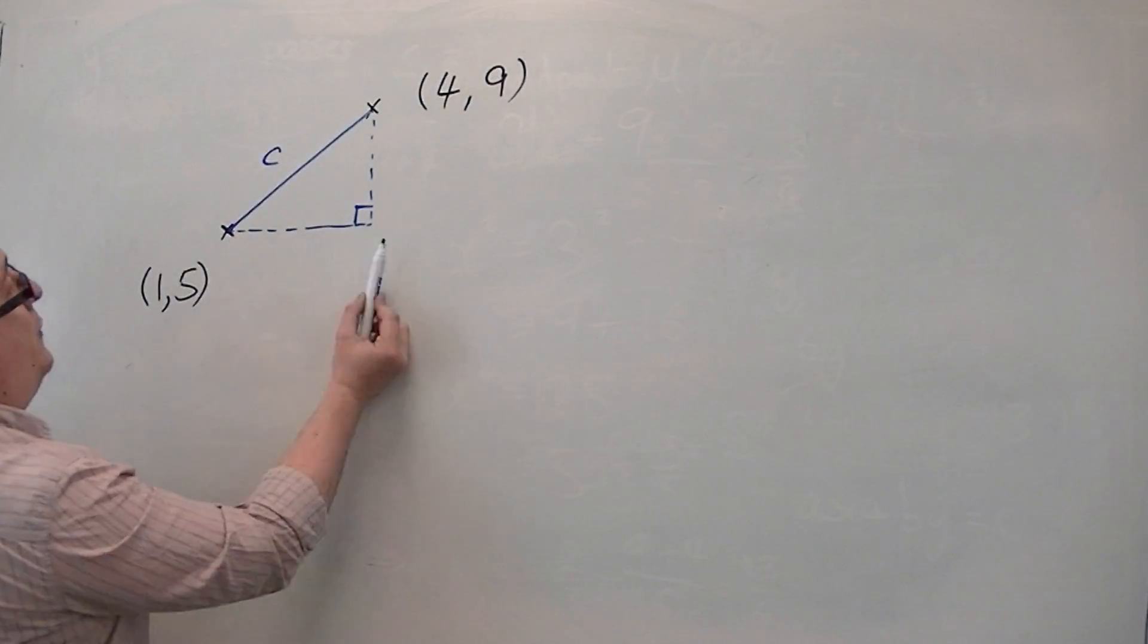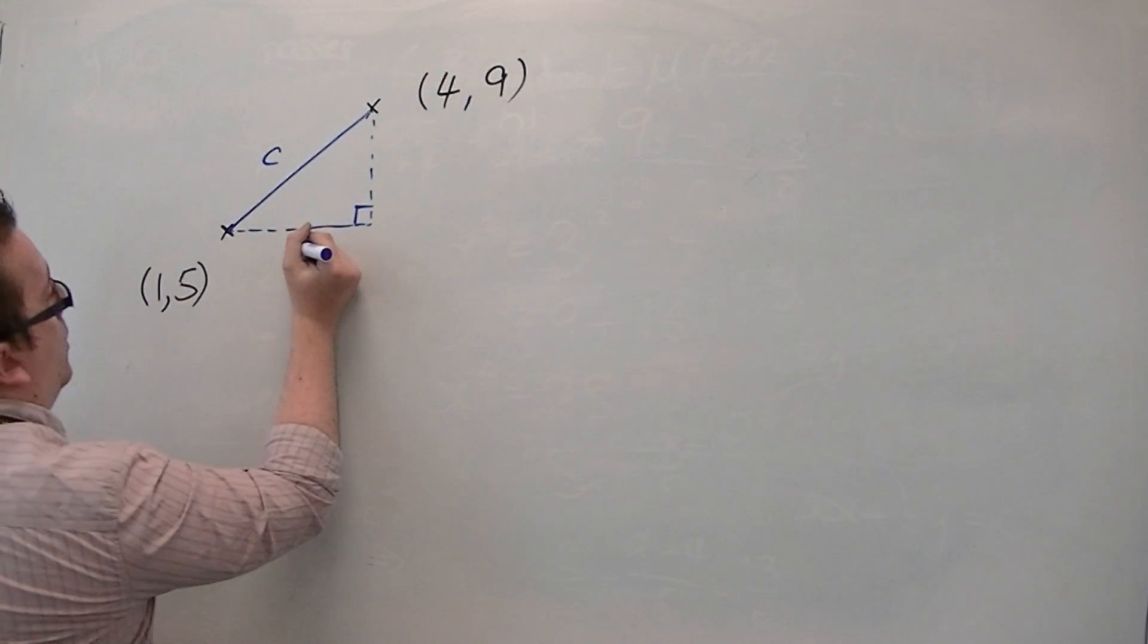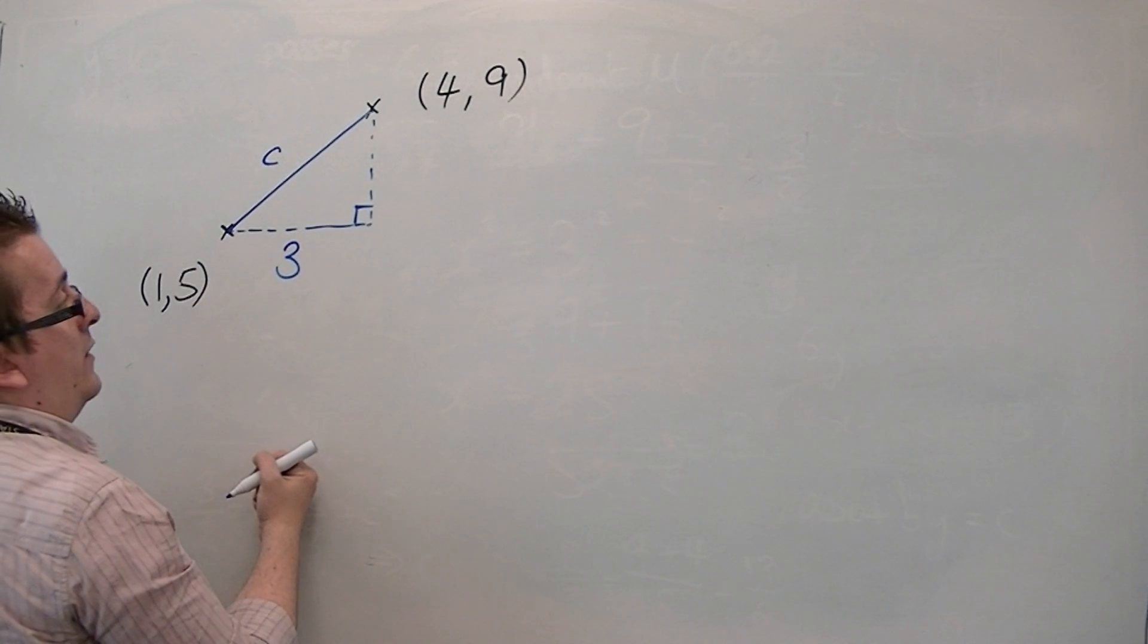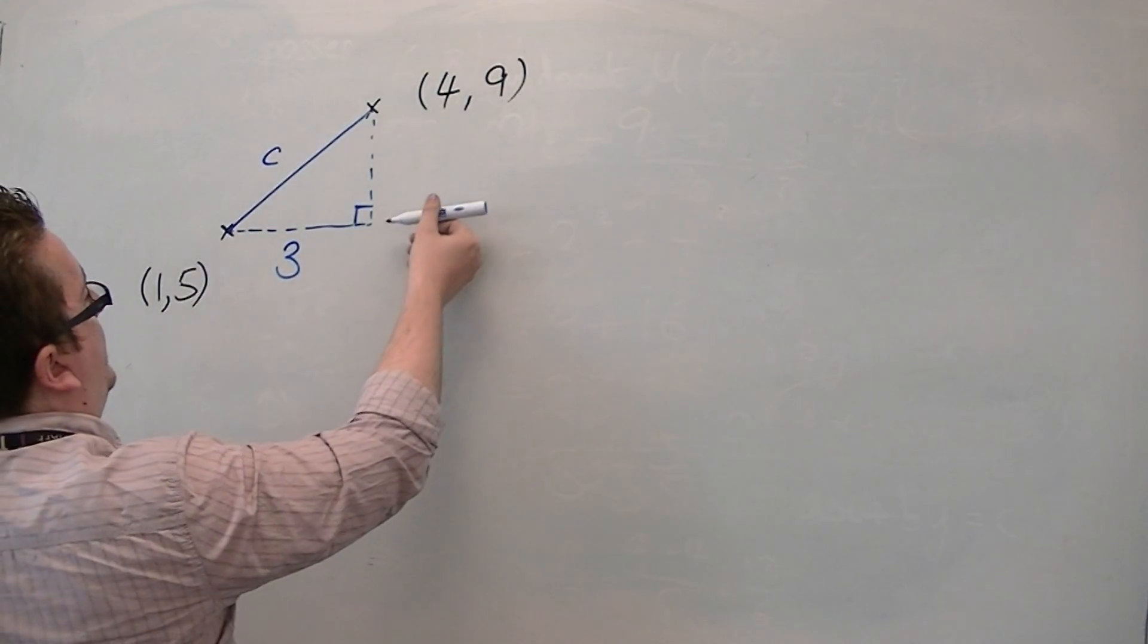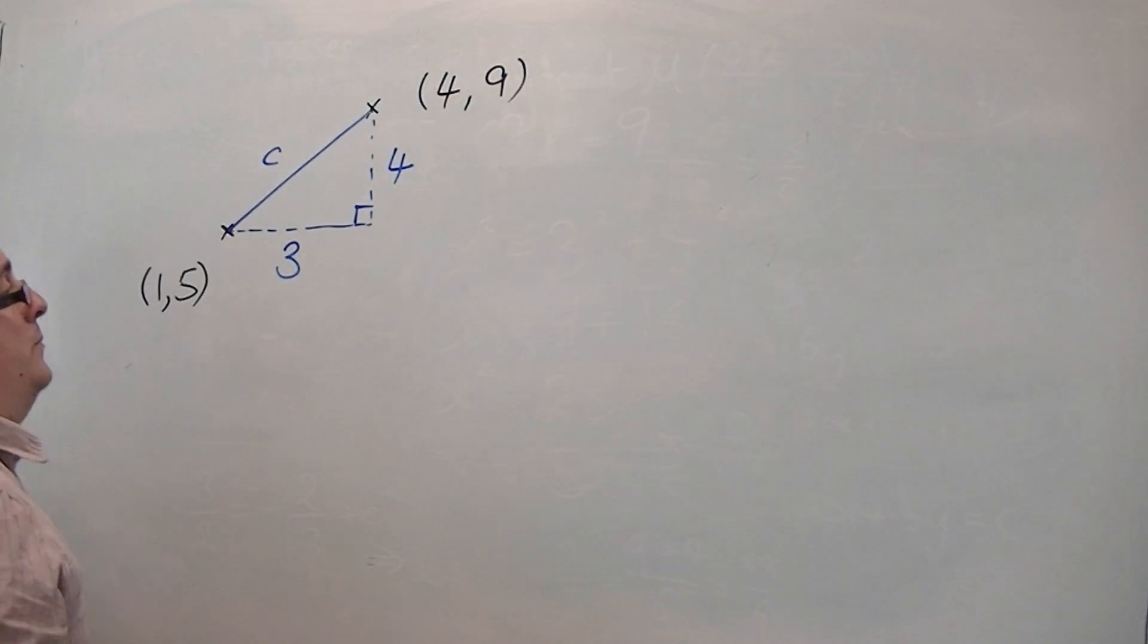So, the base of the triangle is going from 1 to 4, so the base is length 3, and the height is going from 5 to 9, so it has a height of 4.